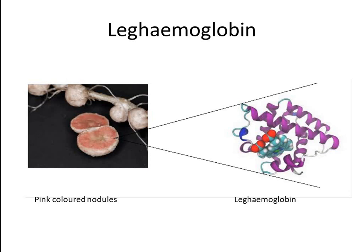The symbiosis between legumes and rhizobia is not obligatory. Legume seedlings germinate without any association with rhizobia and may remain unassociated throughout their life cycle; rhizobia also occur as free living organisms in the soil under nitrogen-limited conditions. However, under appropriate conditions, the symbiotic partners seek out one another through an elaborate exchange of signals that links the subsequent infection process and development of nitrogen fixing nodules, involving specific genes in both the host and the symbiont.